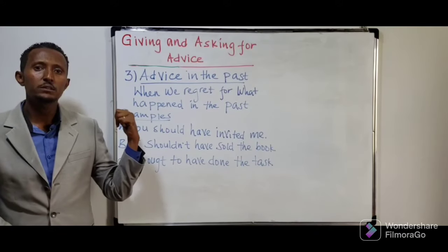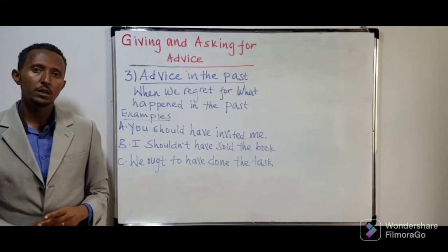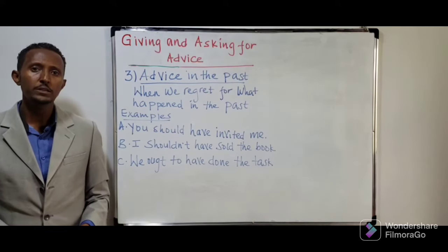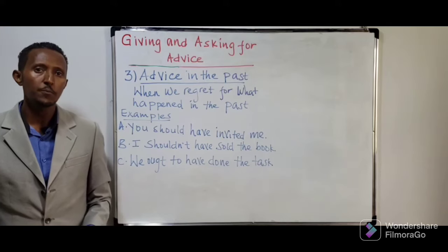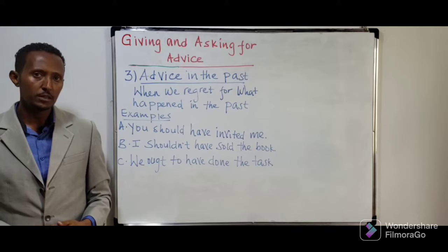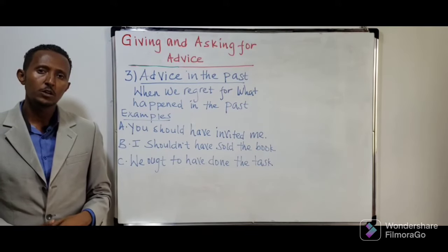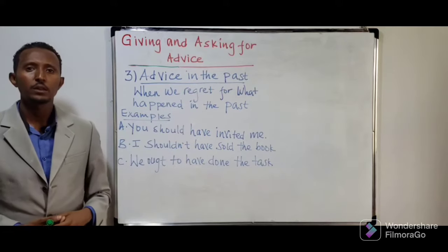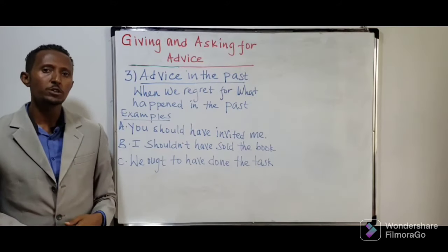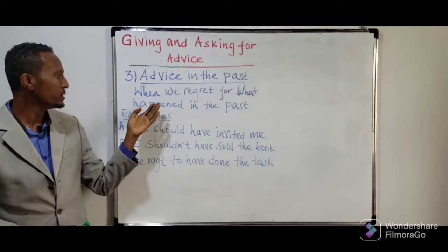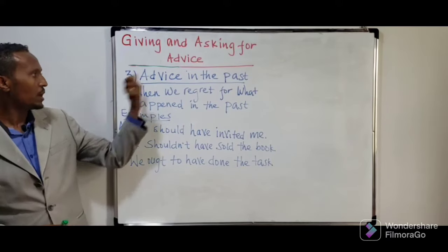The third topic for this discussion is advice in the past. In the first two cases, we give advice or talk about actions that we do in the future. When I say 'you should visit the historical sites in Ethiopia,' 'you should respect your father and mother,' 'you should work hard to be successful in life' — we are referring to an action that could be happening in the future. But there are also expressions we use to talk about what has already been done — when we regret, when we feel the action was wrong, we use advice that indicates the past.